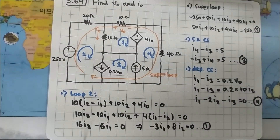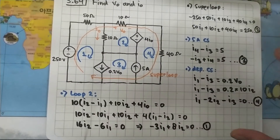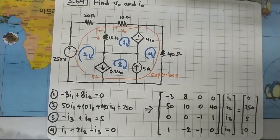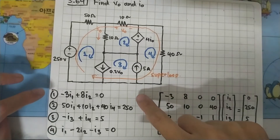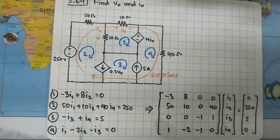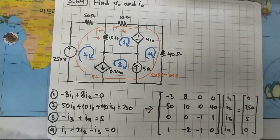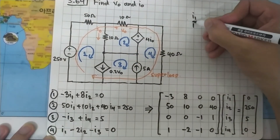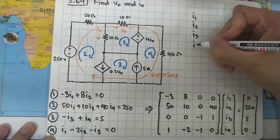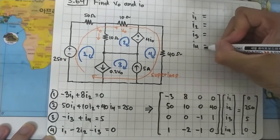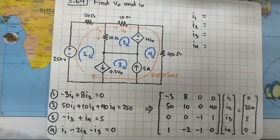Now we have four equations with four variables: I1, I2, I3, and I4. Rewriting these equations into matrix form gives a 4×4 matrix. Rather than solve this manually, which would take a long time, we plug it into MATLAB.